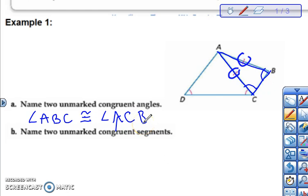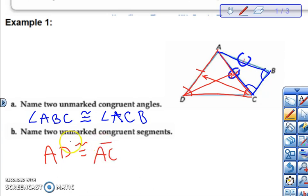As far as our unmarked congruent segments, we kind of work it the other way around. We notice that they gave us two congruent angles in this triangle here. It means ADC has to be isosceles. We look at it, the congruent sides are always across from the congruent angles. Therefore AD must be congruent to AC.